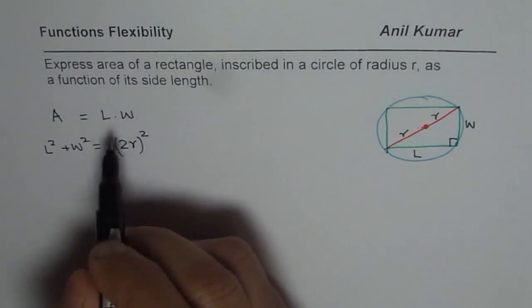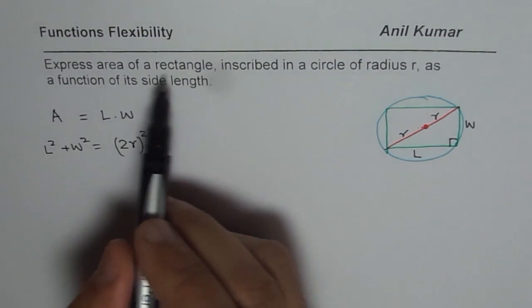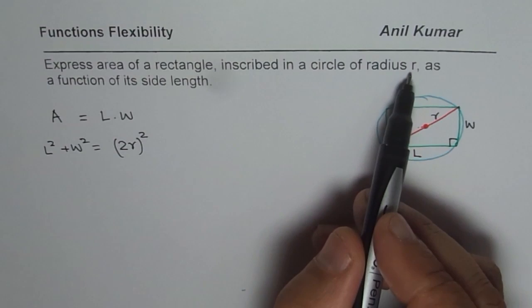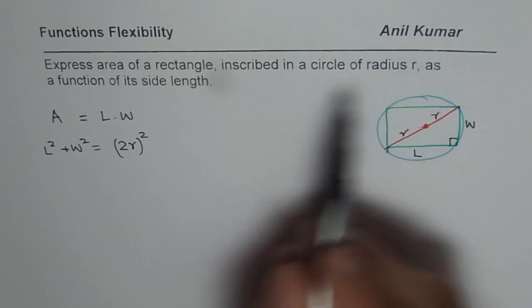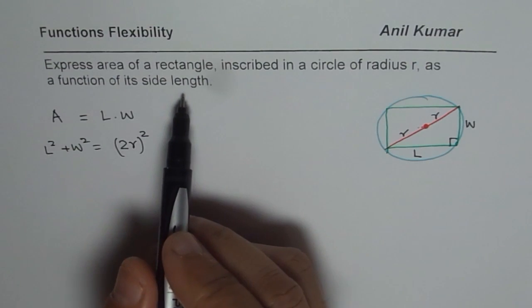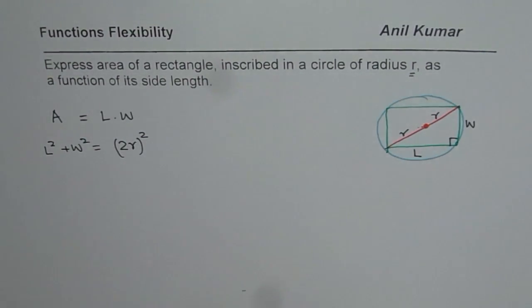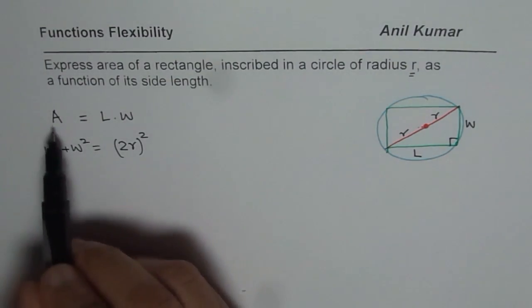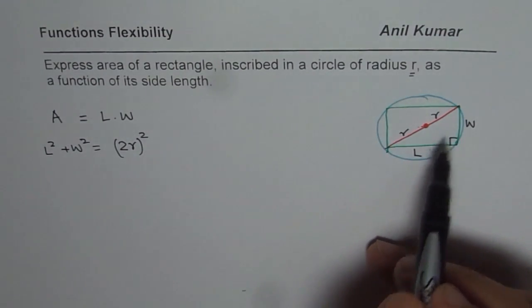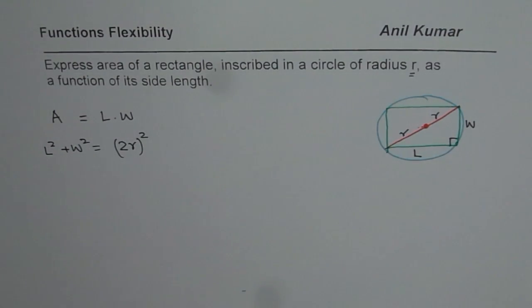Now let's read the question once again. Express area of rectangle inscribed in a circle of radius r as a function of its side length. So we have to basically include the radius r in our formula. So we will write this area in terms of radius and one of the lengths not both of them. That's the whole idea.